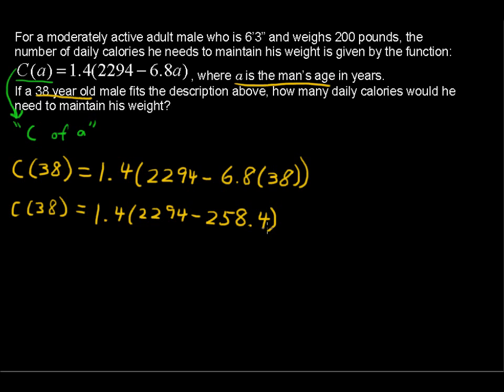Simplify this and we get this number of calories for a 38 year old male equals 1.4 times 2,035.6. So let's multiply that last number and the number of calories for a 38 year old male that fits that description equals 2,850. 2,850 calories per day.